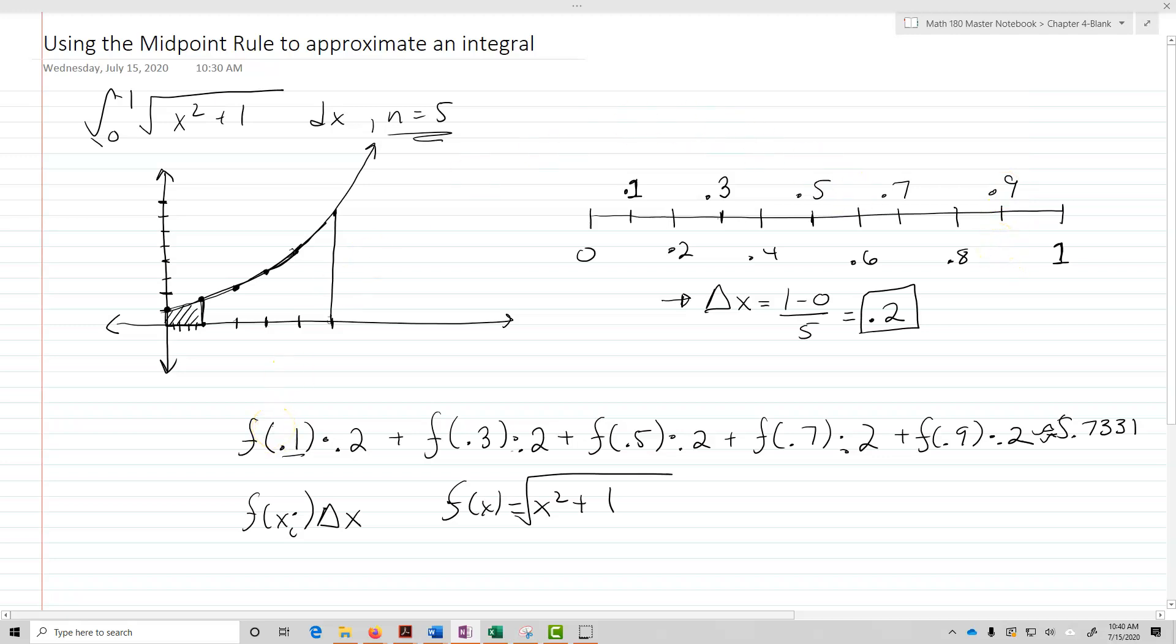Finally, I'm going to put that into my sum, my summation for the integral or for the area, and I'm going to take f of 0.1 times 0.2, right? Take the function at the midpoint times delta x, and I'll add that up for each value. And that ends up giving me my approximation for the integral.